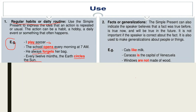The second use that we are going to learn is facts or generalizations — whether it is a scientific fact or a universal truth. We always use simple present tense. The simple present tense can also indicate the speaker believes that the fact was true before, is true now, and will be true in the future. It is not important if the speaker is correct about the fact. It is also used to make generalizations about people or things. That means we are asserting something that was true before, is true now, and will be true in the future, whether or not the speaker is certain about it.